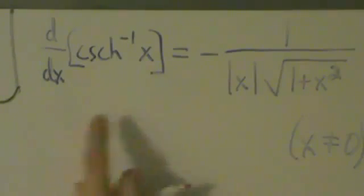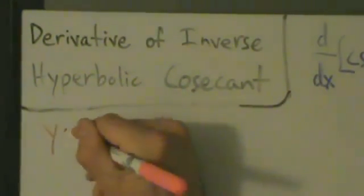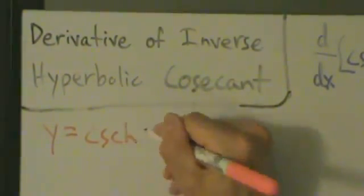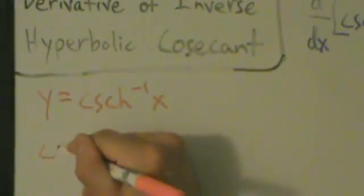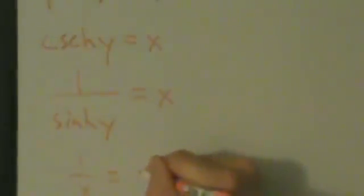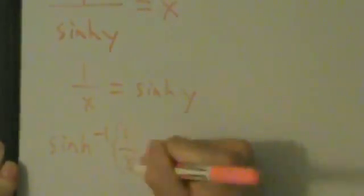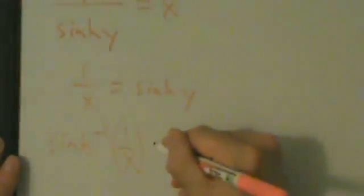Let's see where this formula comes from, the same way we did in the last two videos. We start by saying y equals inverse hyperbolic cosecant of x, therefore hyperbolic cosecant of y equals x. But hyperbolic cosecant of y is the same thing as 1 divided by the hyperbolic sine of y, so that equals x still. Multiplying both sides by sinh(y) and dividing by x gives us 1/x equals sinh(y).